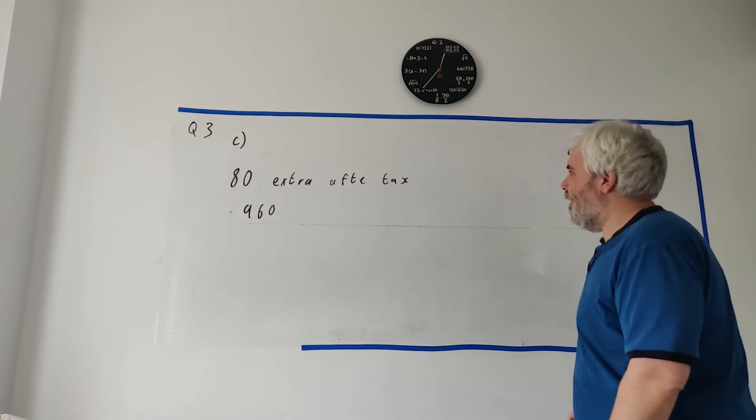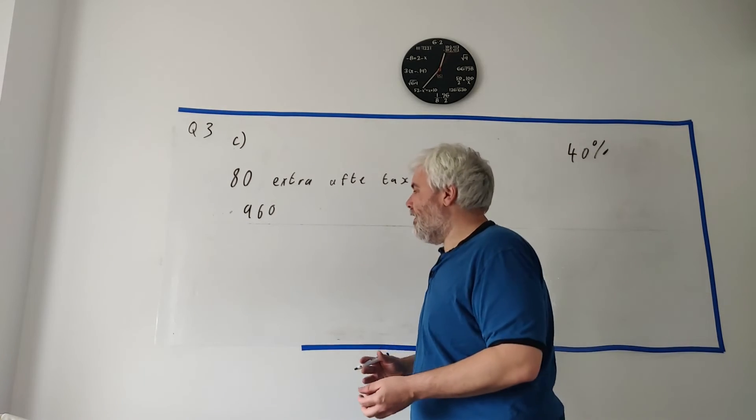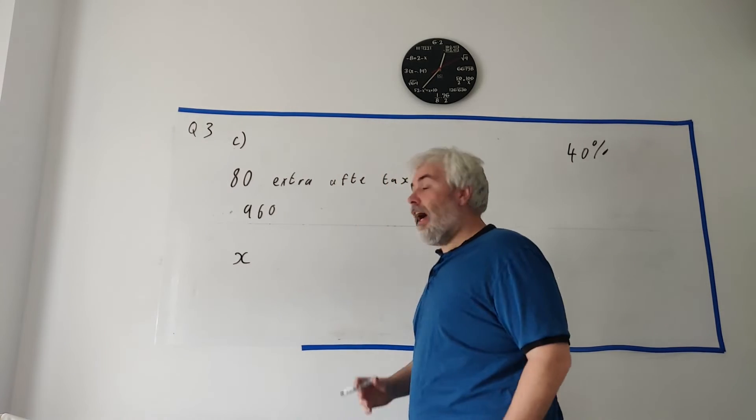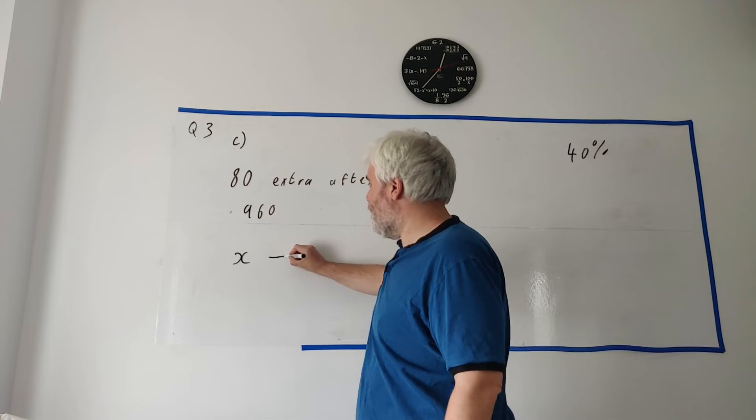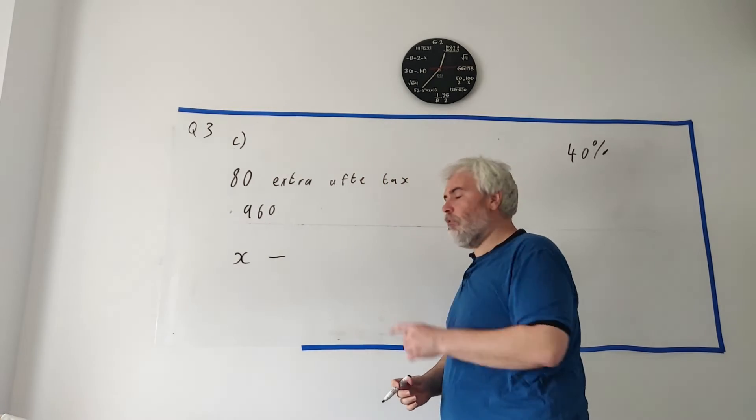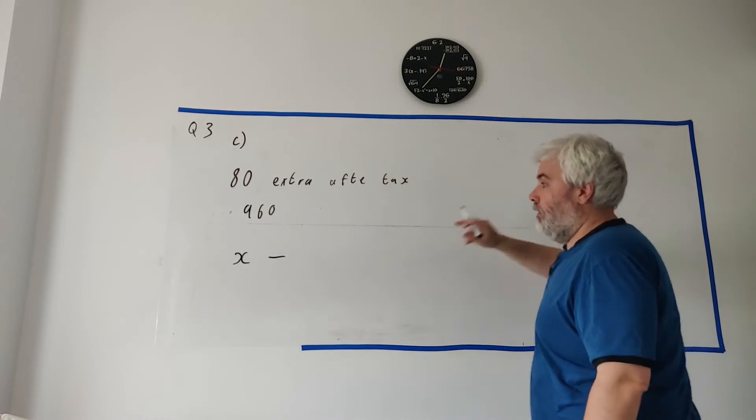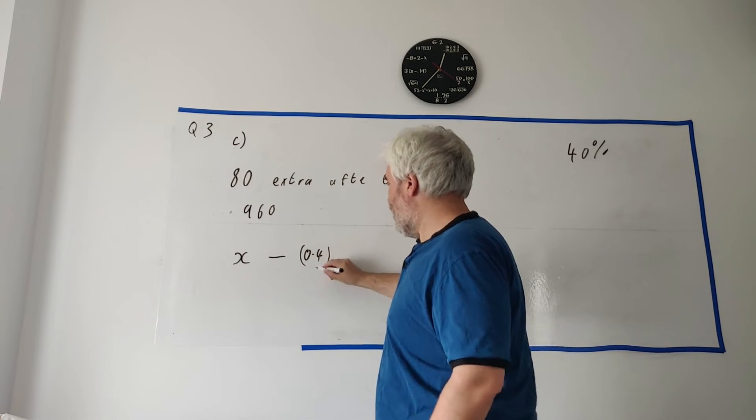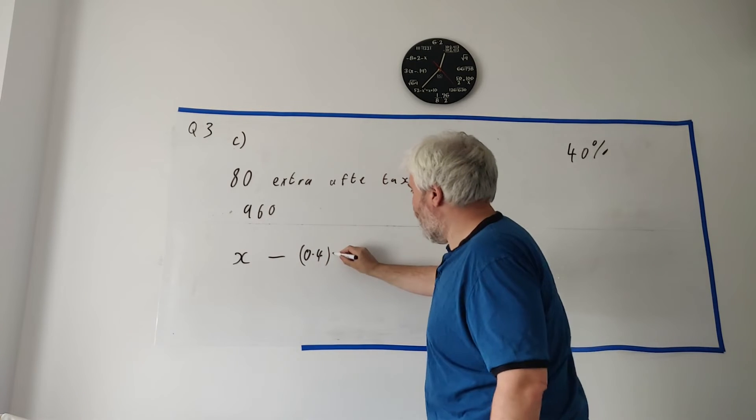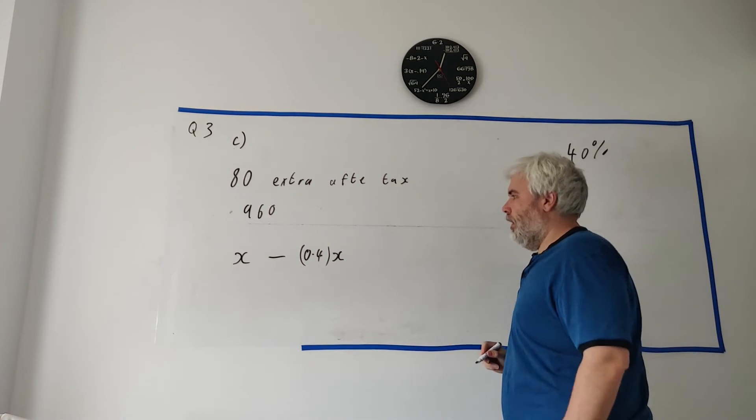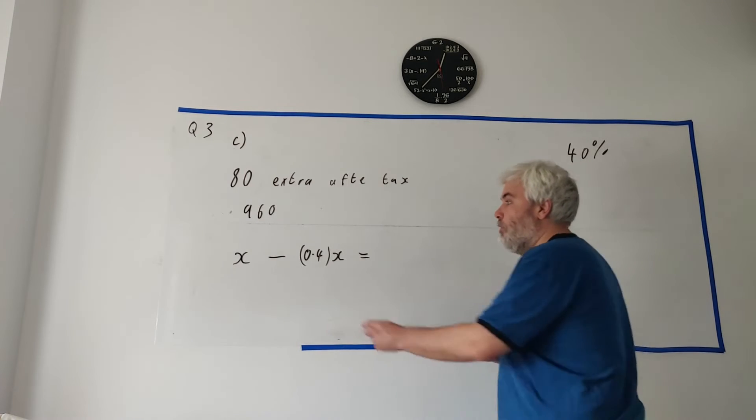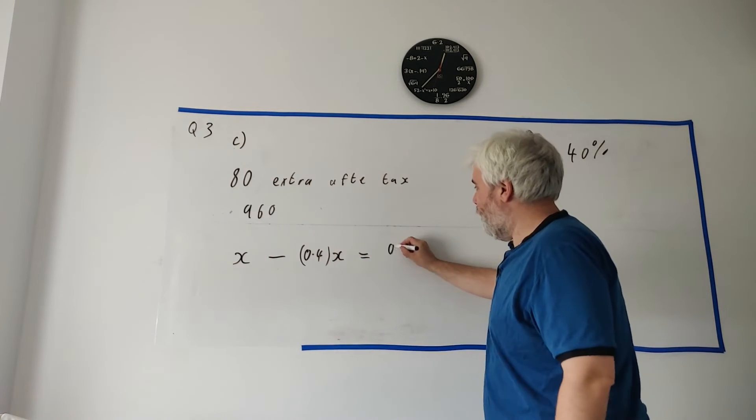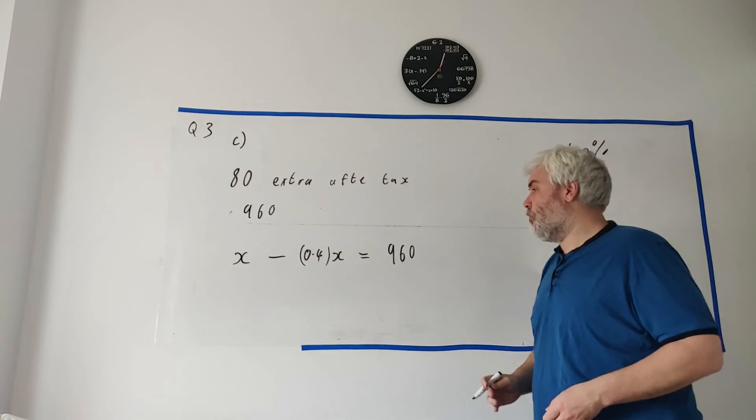How I would do it is, I like to think in algebra. I like to think there's a number we don't know, how much you get paid. And that's x. And then we're going to take away the tax. Well, we've seen how to work out tax. We get 40% of how much gets paid. Well, that's 0.4, that's 40% by the way, multiplied by x. And this has to equal - so how much she gets paid minus the tax equals her net income. So that's how I would do this question.